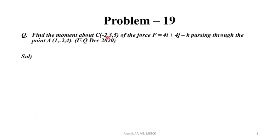Find the moment about C(-2, 3, 5) of the force F = 4i + 4j - k passing through the point A(1, -2, 4).